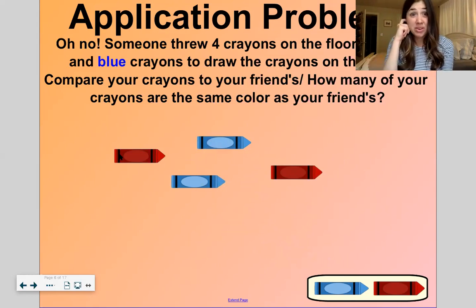Oh man. Someone threw four crayons on the floor. What color crayons do you see? Red and blue. Yes. Let's see. How many of our crayons are red? Two.